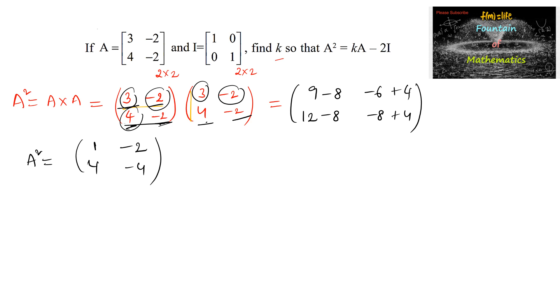And now K times A, which is equal to K times A minus 2I. So here K times A is equal to K times 3, minus 2, 4, minus 2, which is equal to 3K, minus 2K.